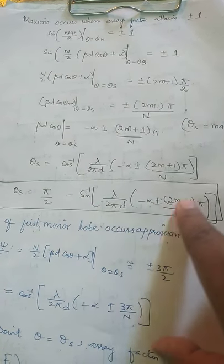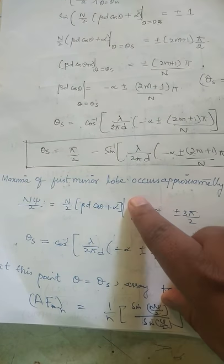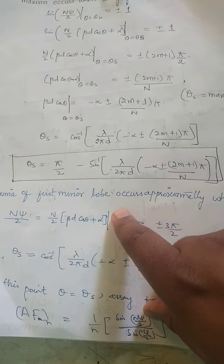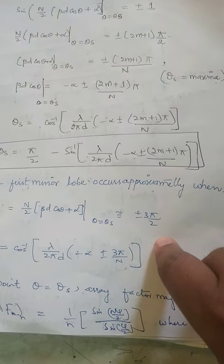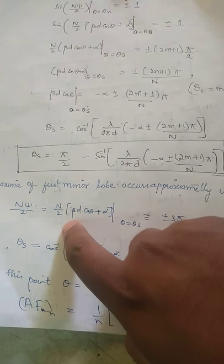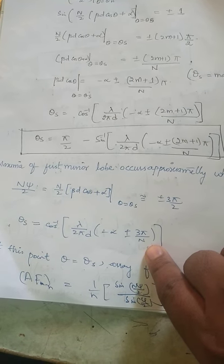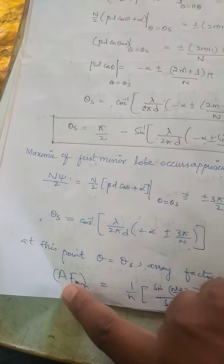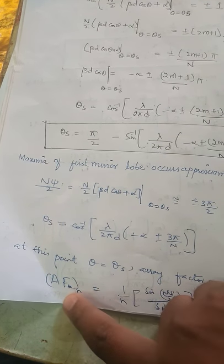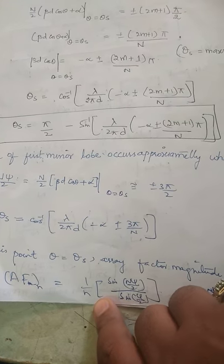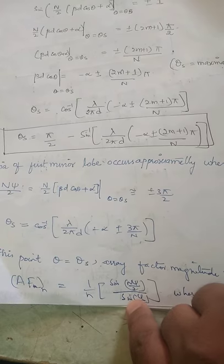Similarly, to get the maxima of the first minor lobe — we have two types of loops: one major and one minor. For the first minor lobe, we set N·chi/2 approximately equal to 3·pi/2. Shifting the 2, the 2s cancel and we are left with N. Using the array factor for N elements: AF = (1/N) times sin(N·chi/2) divided by sin(chi/2). With N·chi/2 = 3·pi/2.